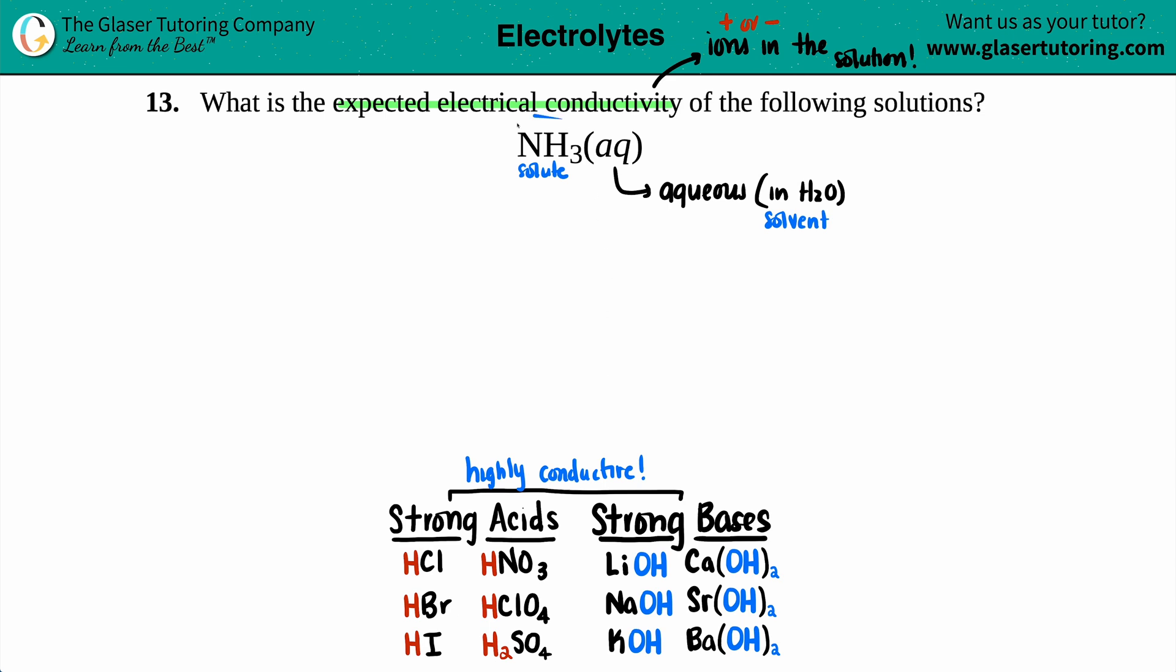However, NH3 doesn't really make the cut. So now I say to myself, okay, well, what other highly conductive or strong electrolytes are there? And just keep in mind that electrolytes are basically the same exact idea as that you just have ions in a solvent. So you have ions in your solution.